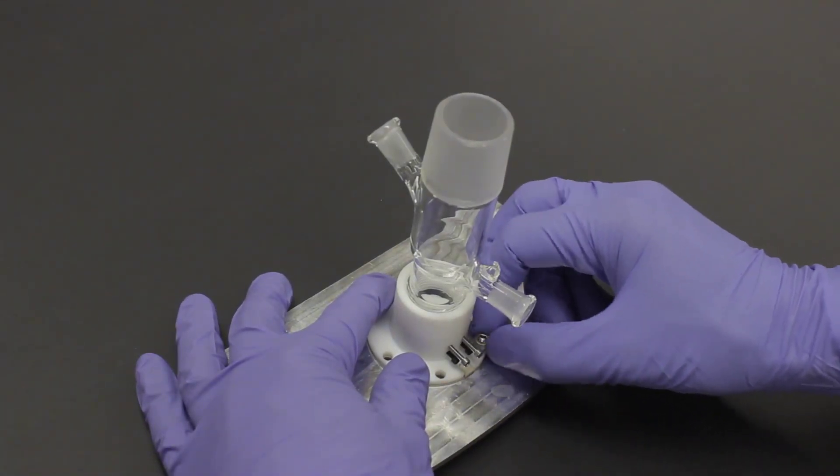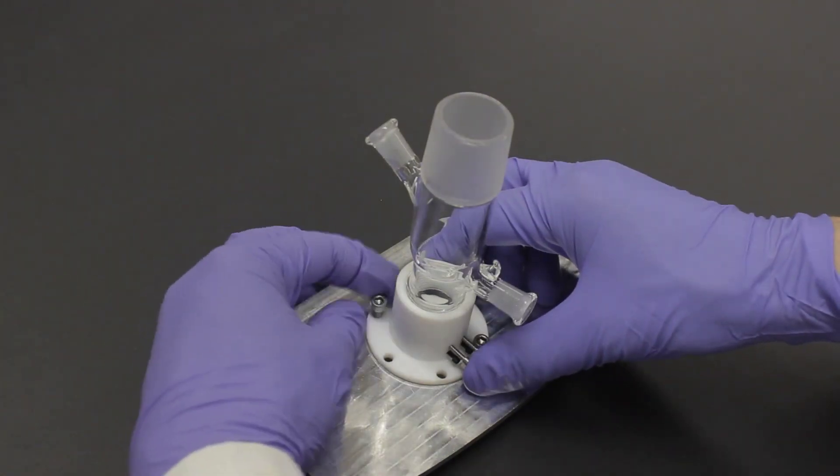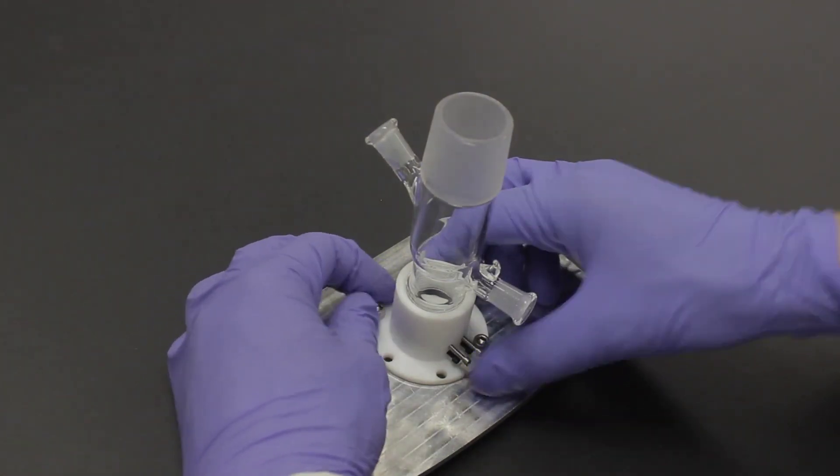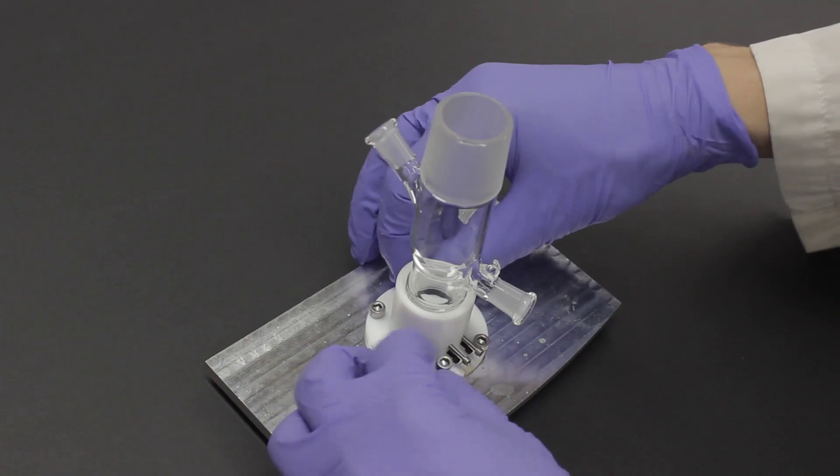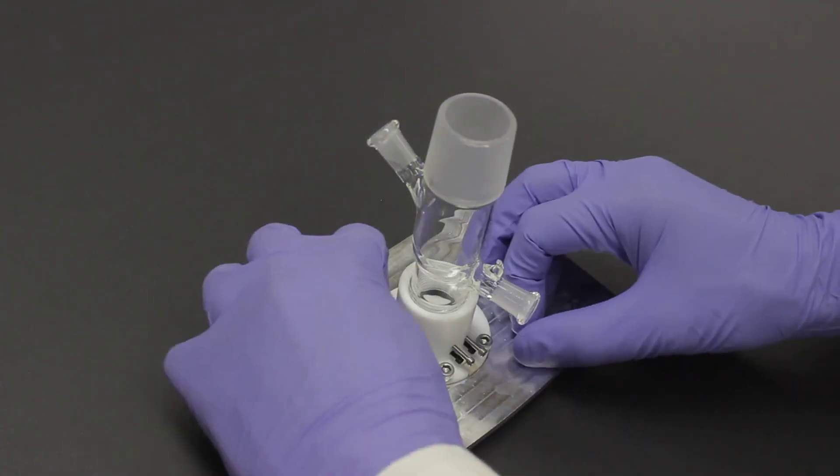Take extra care when fastening the cell if using wafers, as they are quite delicate. Tightening the screws by hand is sufficient. Take care not to over-tighten. If there is a leak, you can always tighten the screws a bit more, but if the wafer breaks, you'll have to start over with a brand new wafer.